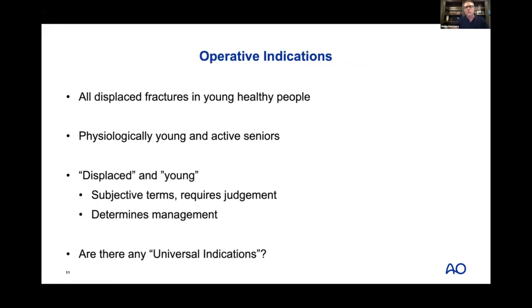Operative indications: all displaced fractures in young, healthy people, and physiologically young and active seniors. 'Displaced' and 'young' are subjective terms requiring judgment. What is a displaced greater tuberosity fracture — is it 5 mm in an overhead athlete but 15 mm in a 90-year-old? Your indications are really based on your patient and their needs.